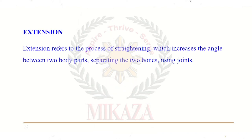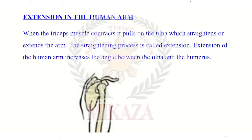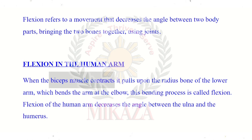Extension refers to the process of straightening — when we straighten a part of the body, it increases the angle between the two body parts, separating the two bones using joints. Extension in the human arm: when the triceps muscles contract, it pulls on the ulna, which straightens or extends the arm. This straightening process is called extension. Extension of the human arm increases the angle between the ulna and the humerus. So in flexion the bicep muscles contract, and in extension the triceps muscles contract — that is the key difference.